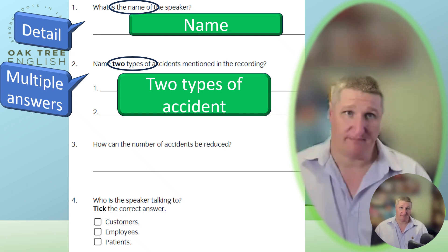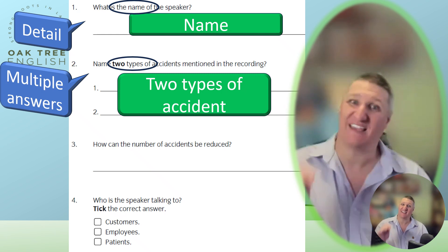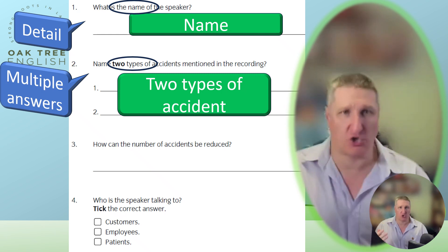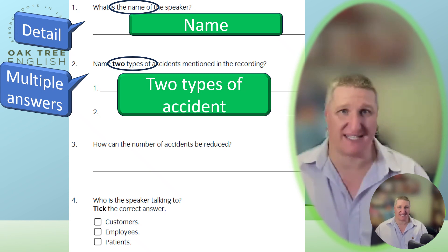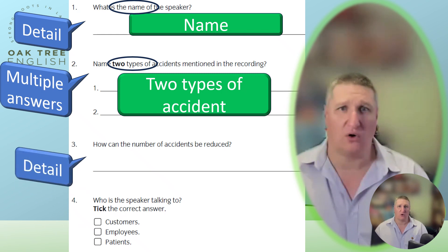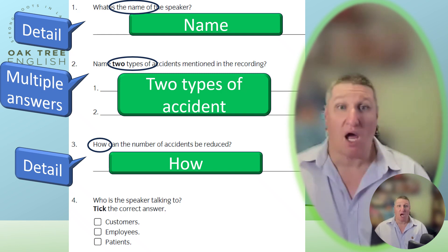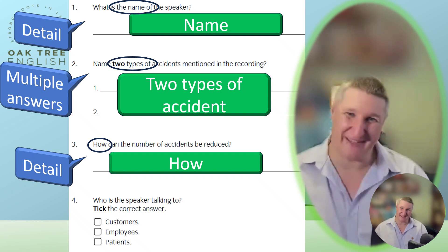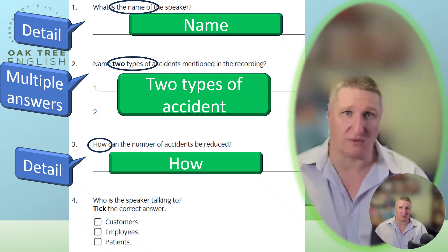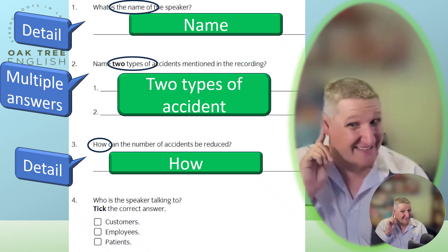Question three begins with 'how'. Therefore, it is asking for a method or a precaution, such as by taking more care, or by clearing up spills, or not building a nuclear reactor out of cardboard. A clear answer will be in the text. Listen for it and don't make up your own, however much you know about the subject. Remember, it is a listening exam.